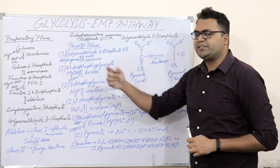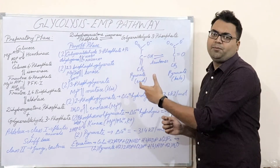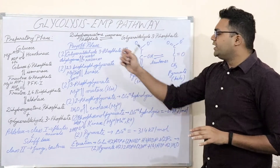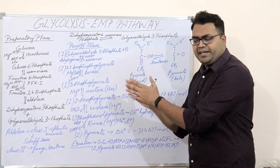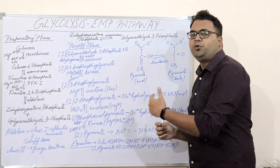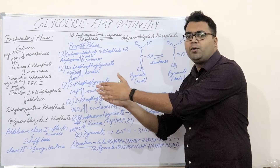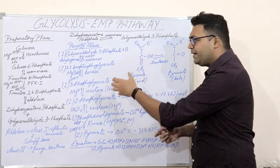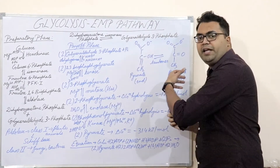In the preparatory phase, a glucose molecule — the 6-carbon molecule and one of the primary sources of energy for any cell — is broken down. In its dissociation or breakdown, two ATP molecules are used up, and two ADP molecules and two inorganic phosphate molecules are released. Thereby, energy is used up to eventually form glyceraldehyde-3-phosphate.